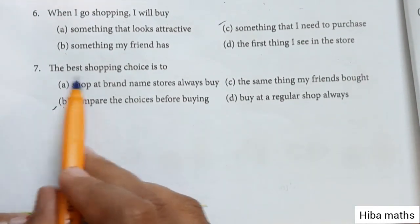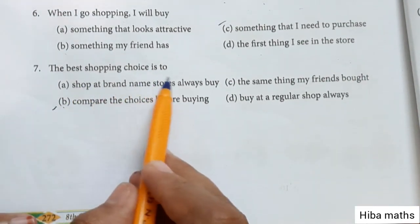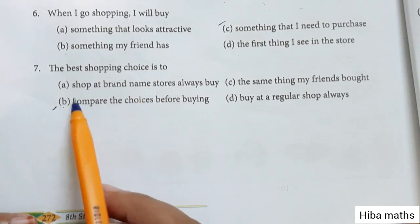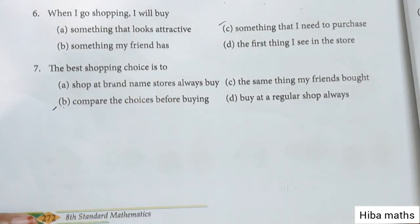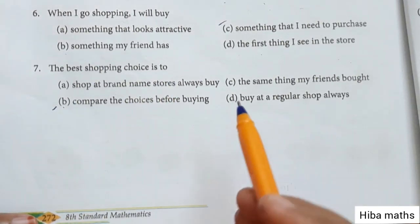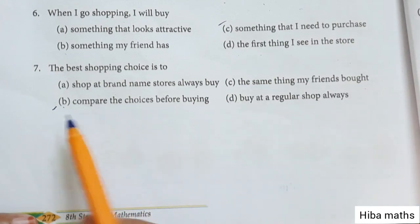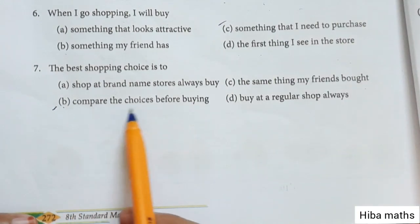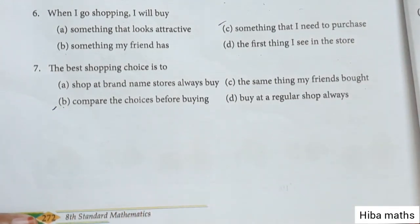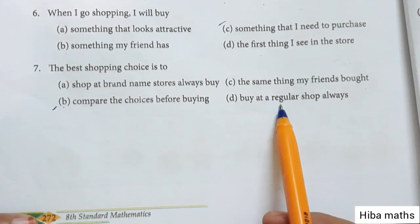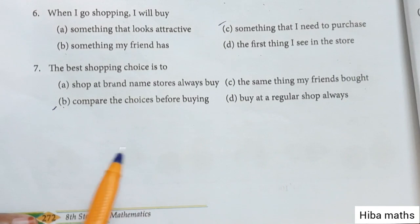2nd one: Best shopping choice is to — shop at brand name stores always, buy the same thing my friend bought, compare the choices before buying, or buy at a regular shop always.